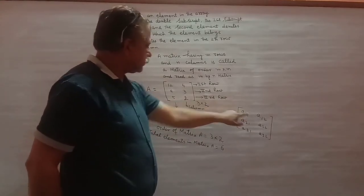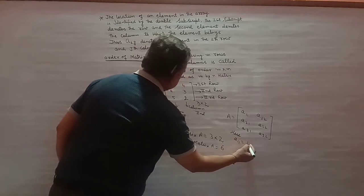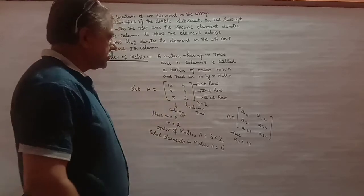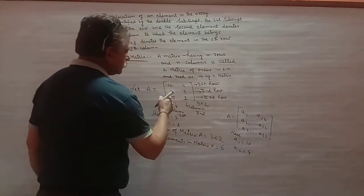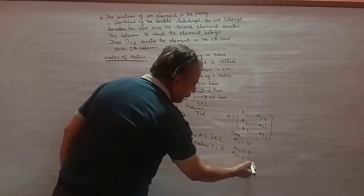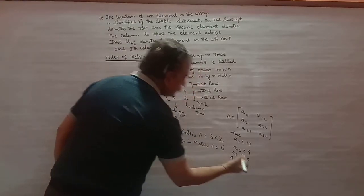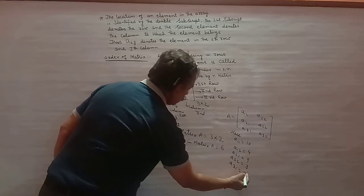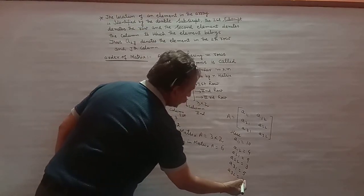A11 बताता है first row, first column — here A11 equal to 10. A12: first row, second column — A12 equal to 4. Similarly, A21: second row, first column — equal to 9. A22: second row, second column — equal to 3. A31: third row, first column — equal to 5. A32: third row, second column — equal to 2.